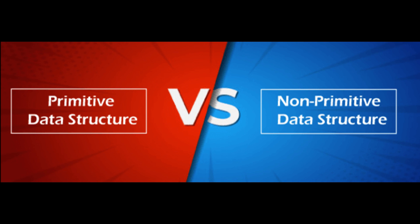Storage: primitive data types store their value directly in memory, which means they occupy a fixed amount of memory space.